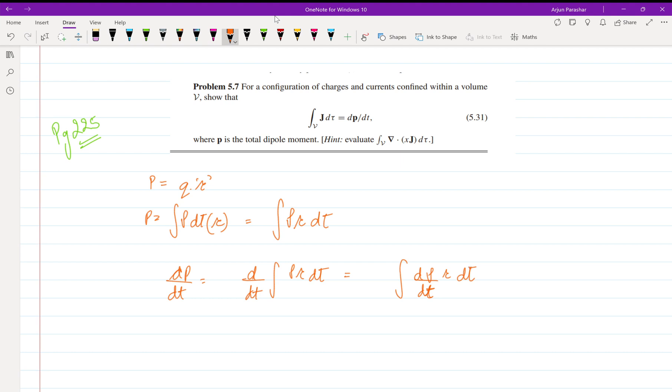So as you know, by equation of continuity, del dot j is equal to negative d rho by dt. I hope you know that by the equation of continuity, it is also given on page number 224.